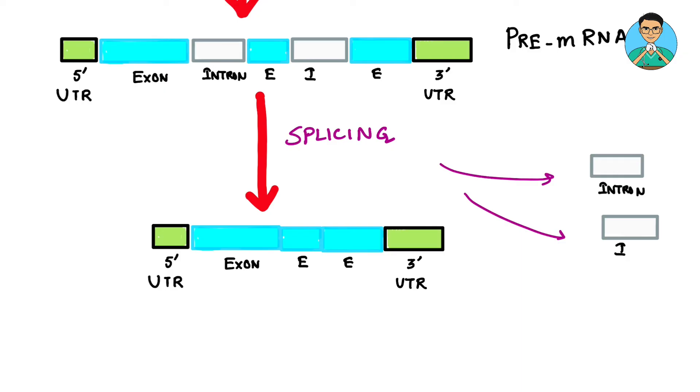Along with splicing, there is also something known as capping and tailing that occurs. That is we get a 5 prime capping with a 7-methylated guanine and we get a polyadenylated tail at the end of the RNA.